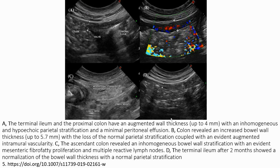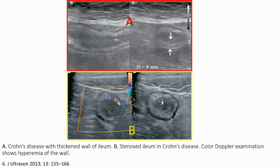There are also a few small reactive lymph nodes. The follow-up scans for the same patient reveal that the wall thickness of the ileum has decreased back to normal. This case is of Crohn's disease. Image A shows thickened ileum wall, and image D shows stenosis of the ileum due to extensive wall thickening and inflammation with hyperemia.